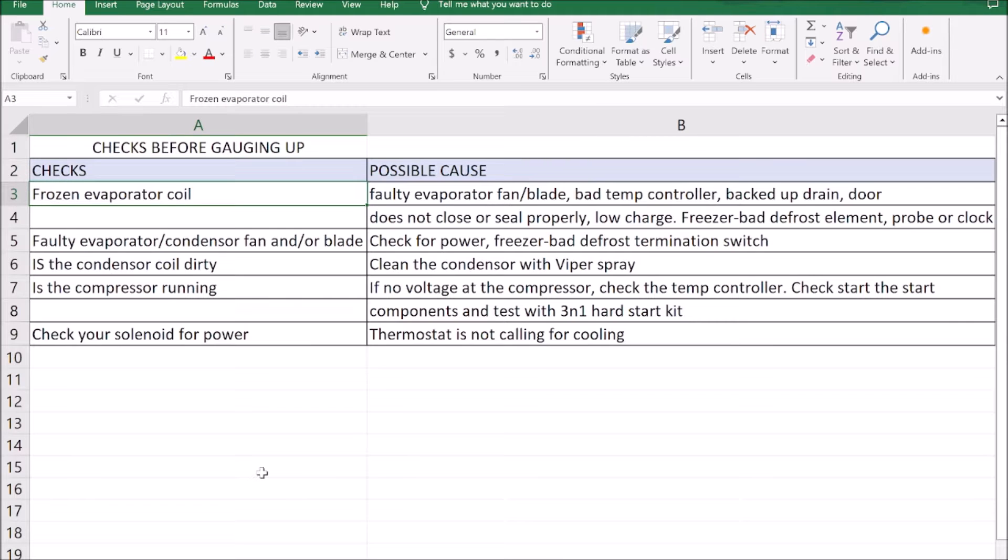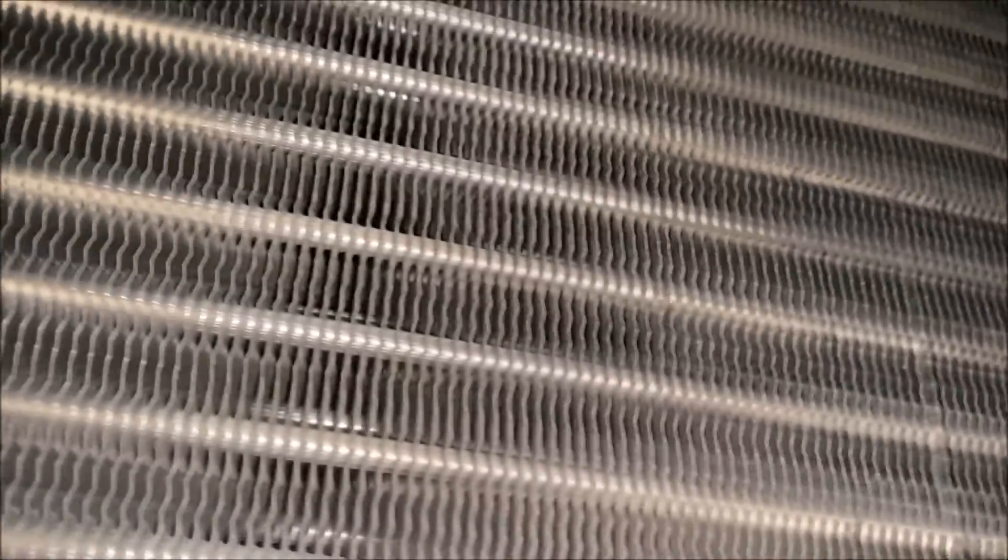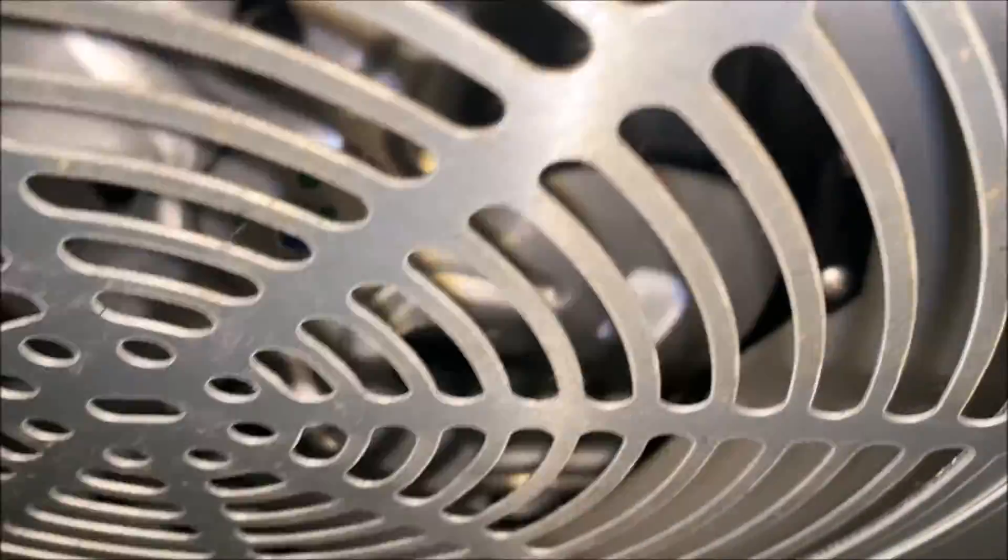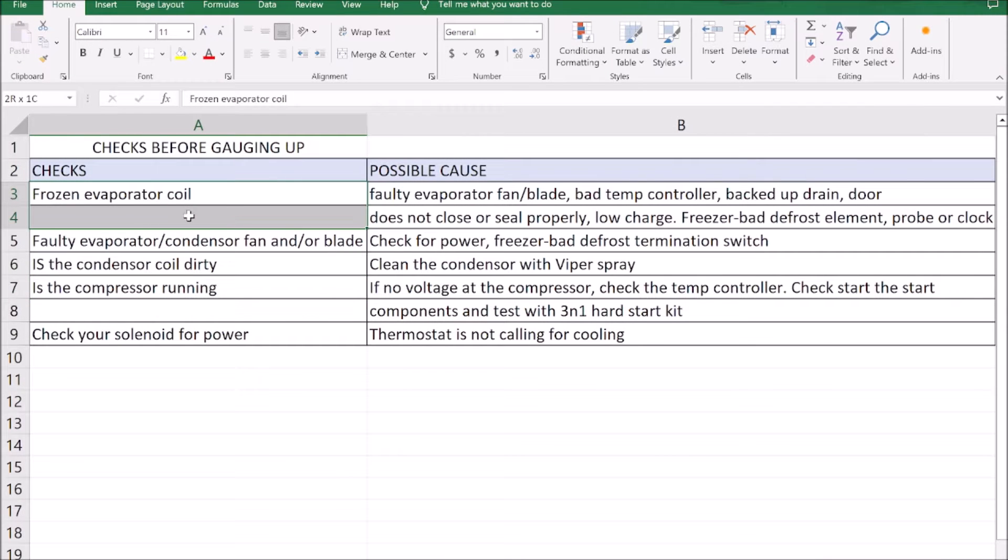The first thing we're gonna check is the evaporator coil frozen. The second thing is our evaporator and condenser fans working, is our condenser coil dirty, and is the compressor running. Once we verify all these things we can go to our possible causes. Our condenser coil is clean, condenser fan is working, evaporator fan is working, our coil is not frozen, and our compressor is running.